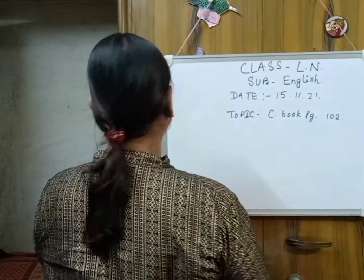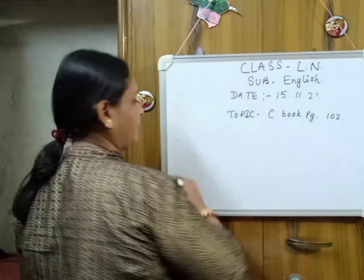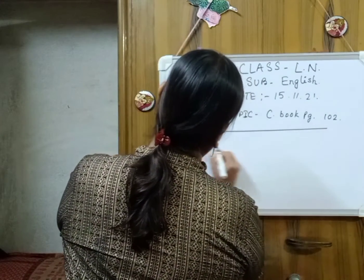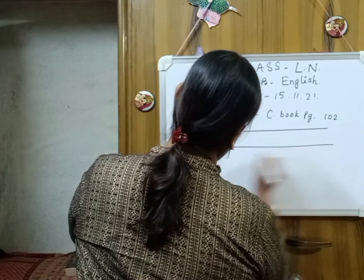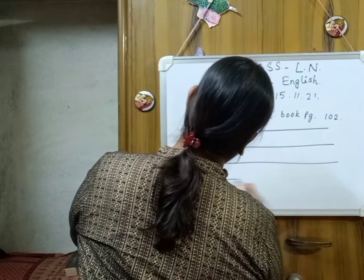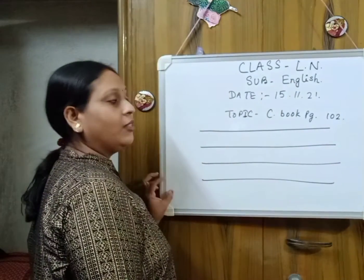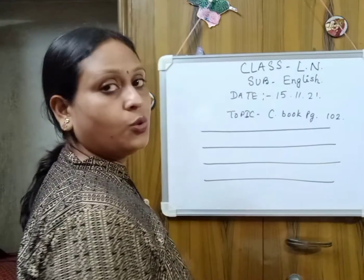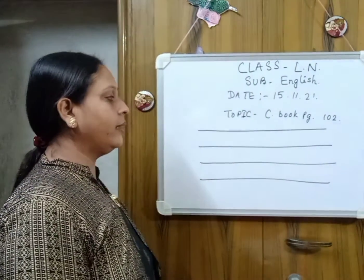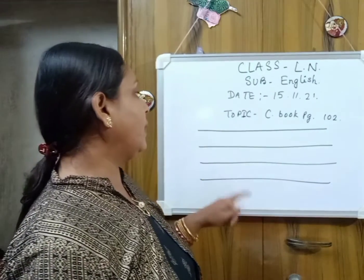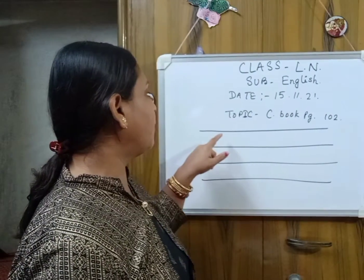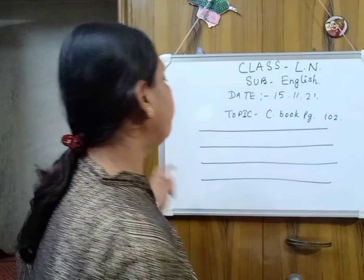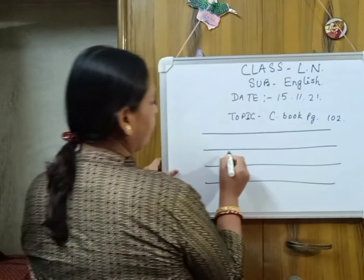How to write small letter S. Look at the book. Small letter S is very simple. As you write the capital letter S, small letter S is also the same, but the difference is that we write capital letter S starting from the top line, but we write small letter S from the middle line. So start from here.